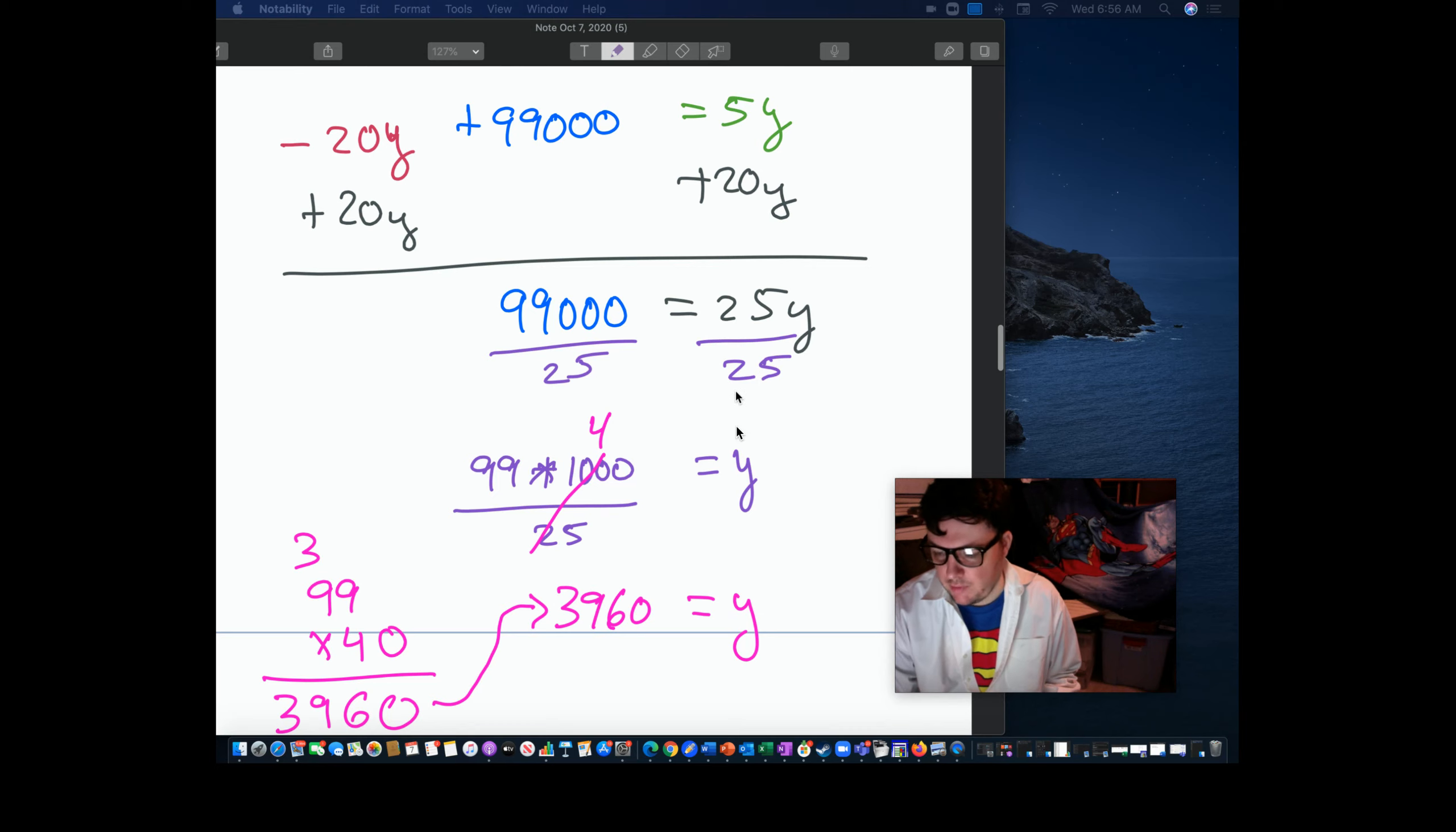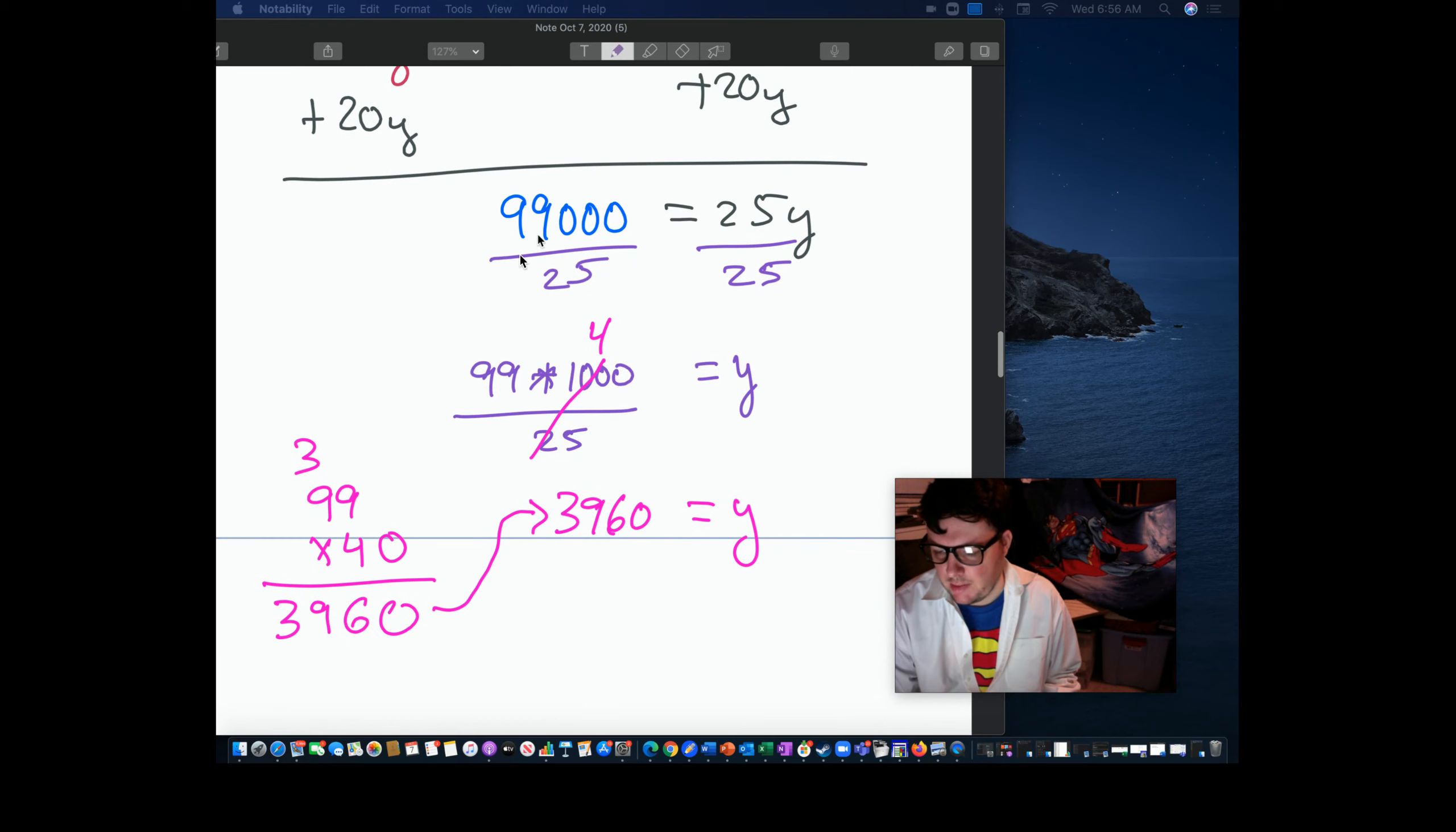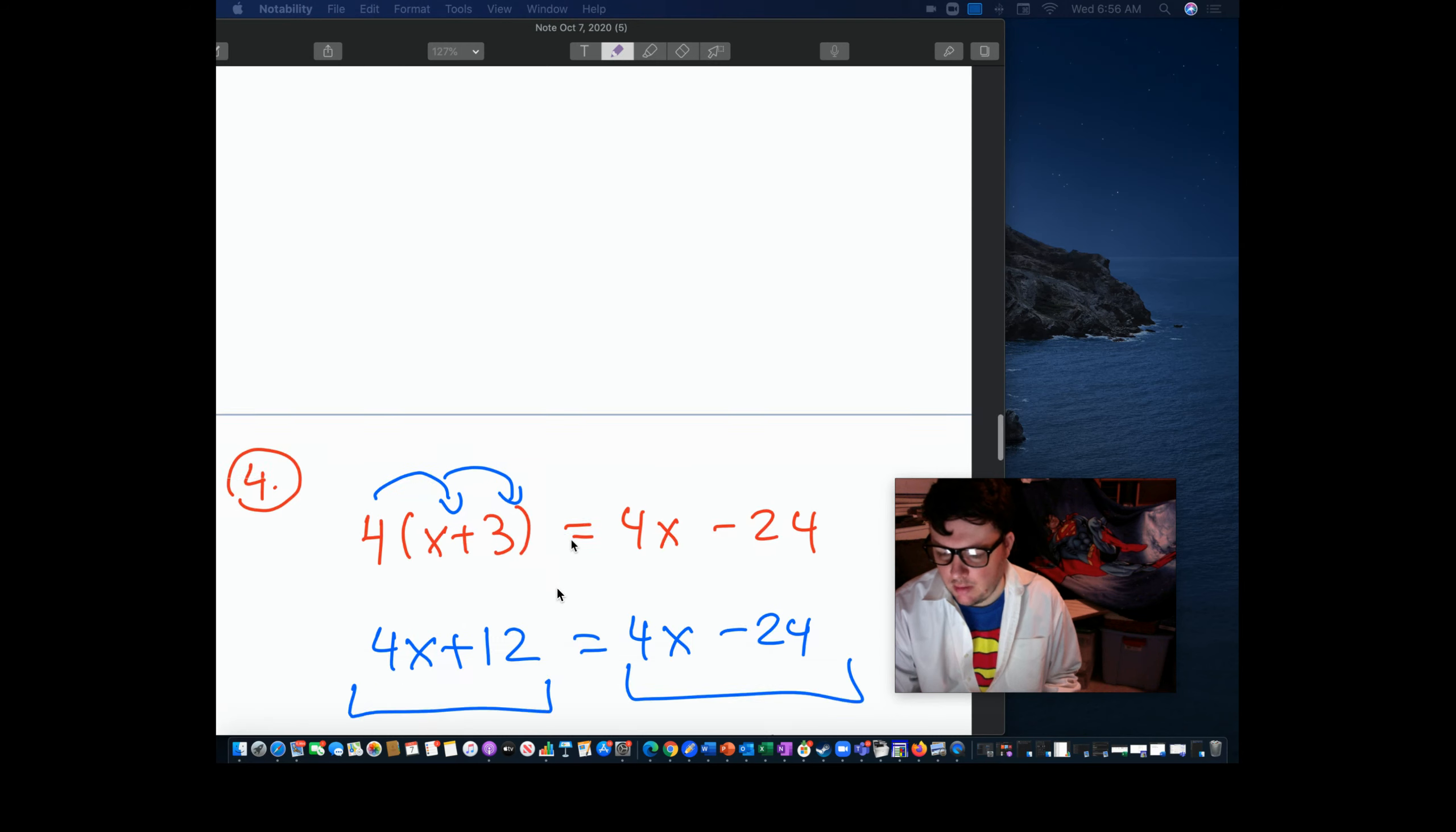And then divide through by 25. Now I did a little math ninjitsu here, because I saw that 99,000 is 99 times 1,000, which 1,000 is easy to play with, because 100 divided by 25, 4 quarters makes a dollar, is 4. 99 times 4, 3960. Boom. On to the next one.